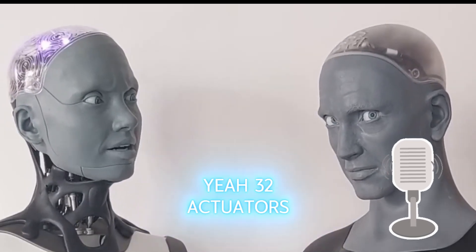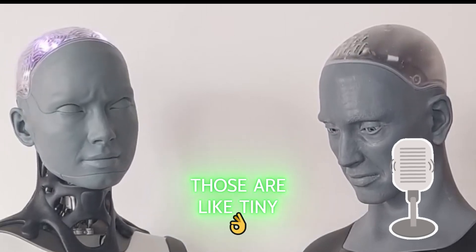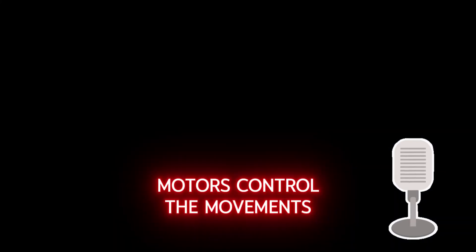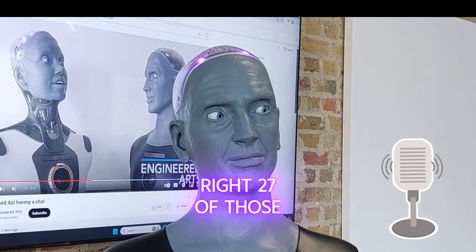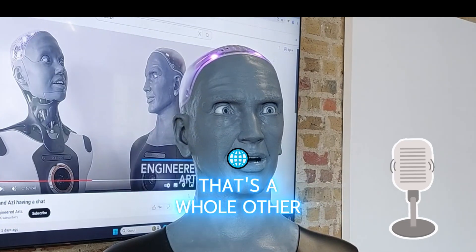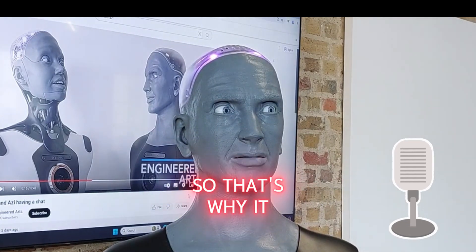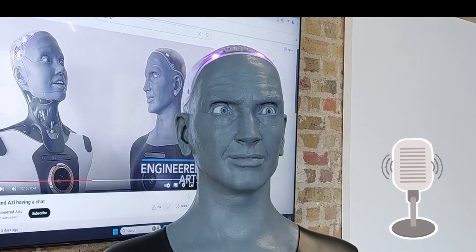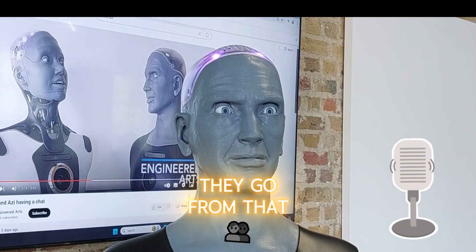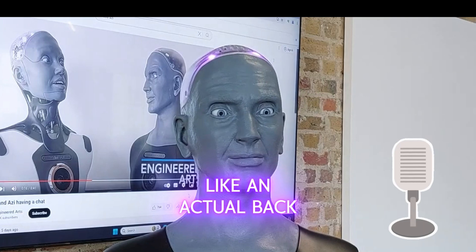Both these robots have 32 actuators - those are tiny motors that control the movements. 27 of those are for facial expressions. That's a whole other level of detail. So that's why it looks so real. But how do they go from that to an actual back and forth?